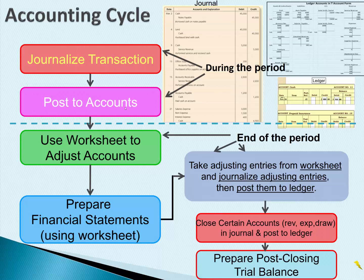What's happening above the line — during the accounting period — is transactions come in in the form of paperwork like bills, invoices, and deposit slips. The accountant or bookkeeper is going to process them in the journal, journalizing the transactions. And then every time something is posted in the journal, either the computer will post it to the ledger, or if it's a manual system, the accountant or bookkeeper will post to the ledgers.